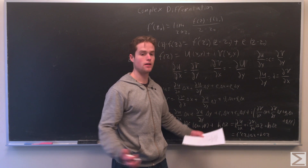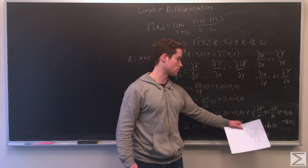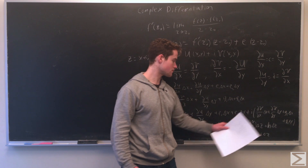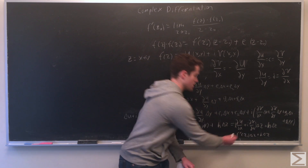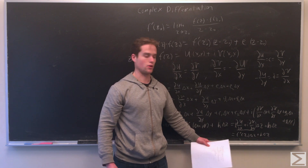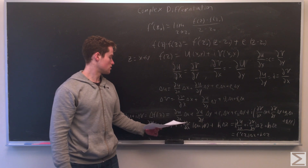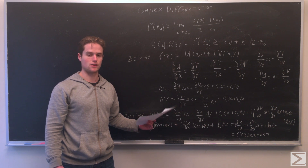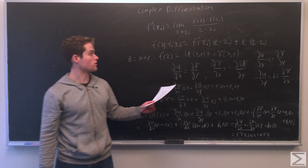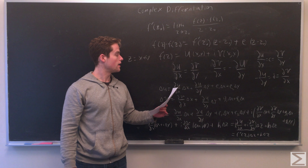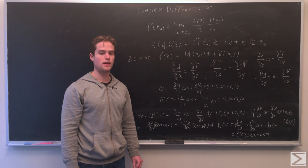So we have delta f(z) equals (partial u partial x plus i times partial v partial x) times delta z plus h times delta z, which equals delta f(z). This is really the derivative we are looking for: some number times delta z plus something that goes to zero as delta z goes to zero. So f(z) is in fact differentiable at this point, assuming the Cauchy-Riemann equations are satisfied. They are a necessary and sufficient condition for the differentiability of a complex function, proving this important theorem.